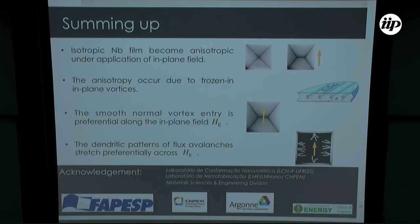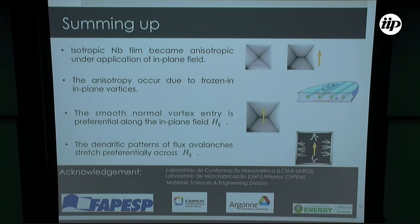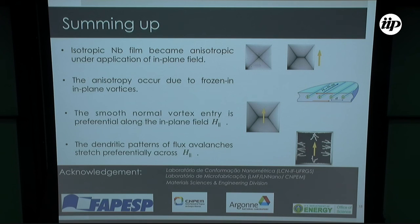To summarize: we have shown that an isotropic niobium film becomes anisotropic under application of an in-plane field. This anisotropy is attributed to frozen-in in-plane vortices. The smooth flux entry is preferential along the in-plane field direction, and the dendritic patterns of flux avalanches stretch preferentially across the in-plane field direction. Thank you very much.